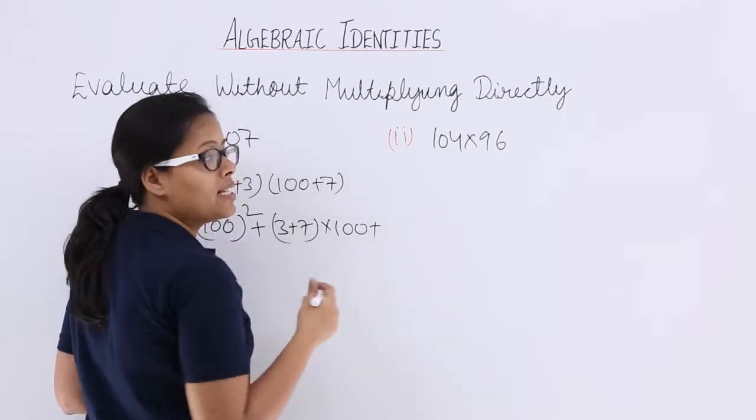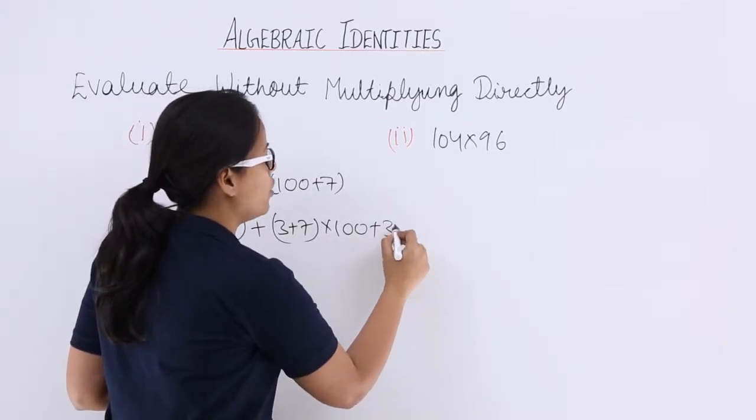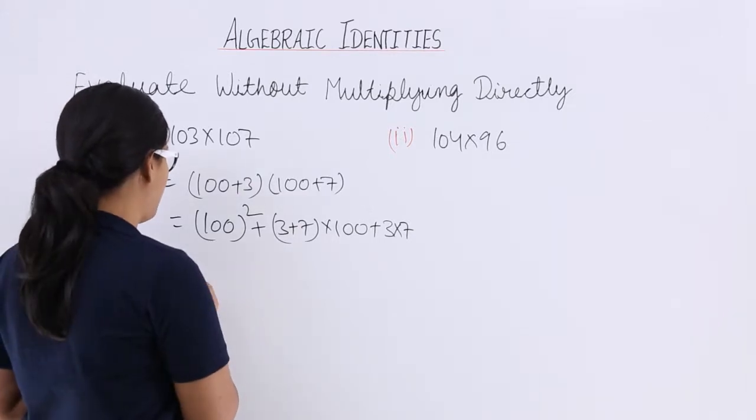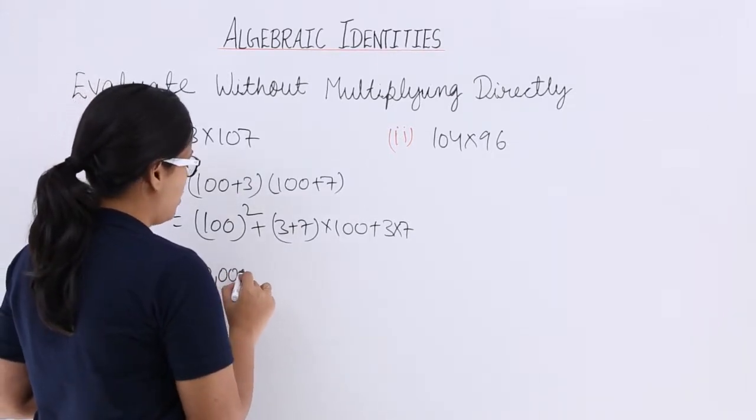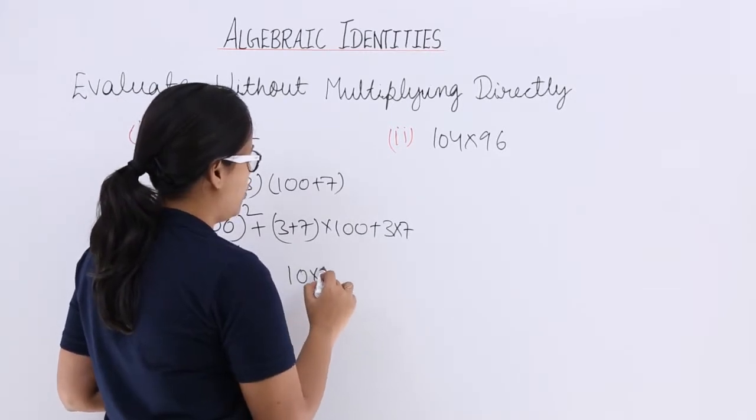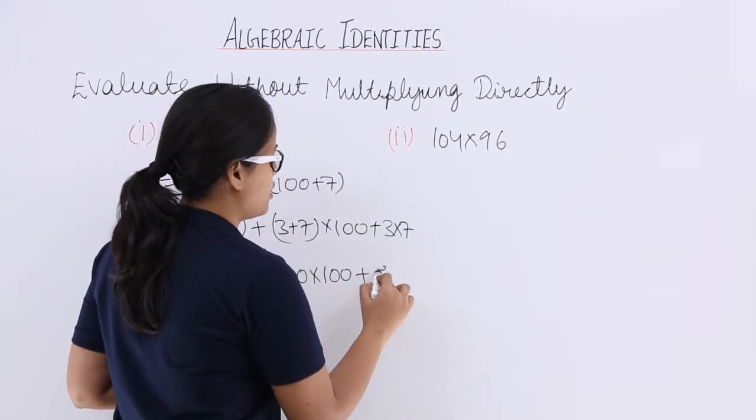plus a times b which is 3 times 7. So now let's start solving it further. 10,000 plus you can write this as 10 times 100 plus 21.